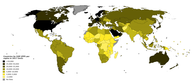Buying bonds or stocks is a swapping of deeds, a transfer of claims on future production, not directly an expenditure on products. Government spending (G) is the sum of government expenditures on final goods and services. It includes salaries of public servants, purchases of weapons for the military, and any investment expenditure by a government. It does not include any transfer payments, such as social security or unemployment benefits.